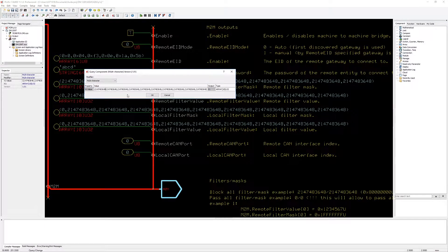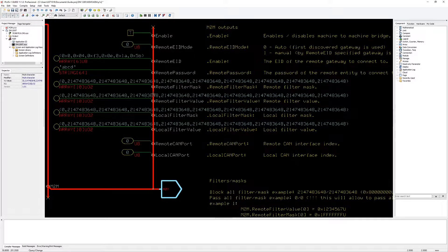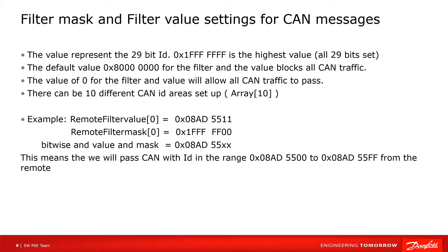On all filter mask and filter values I add a 0 to the first element of the first value and filter mask. This setting means that all CAN messages on the local and remote CAN bus are transferred over the Wi-Fi link. This is not a recommended setting. A better setting is to allow only the CAN messages that are needed on each side of the Wi-Fi link. If we allow all CAN messages to be transferred over the Wi-Fi link, the load on the link is unnecessarily high. But for our initial test, this setting is OK.